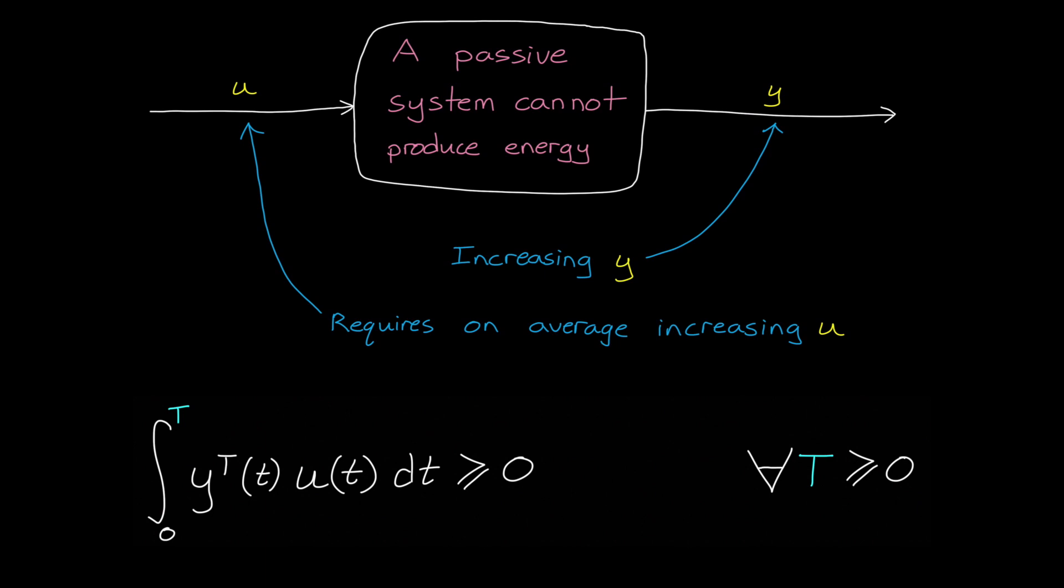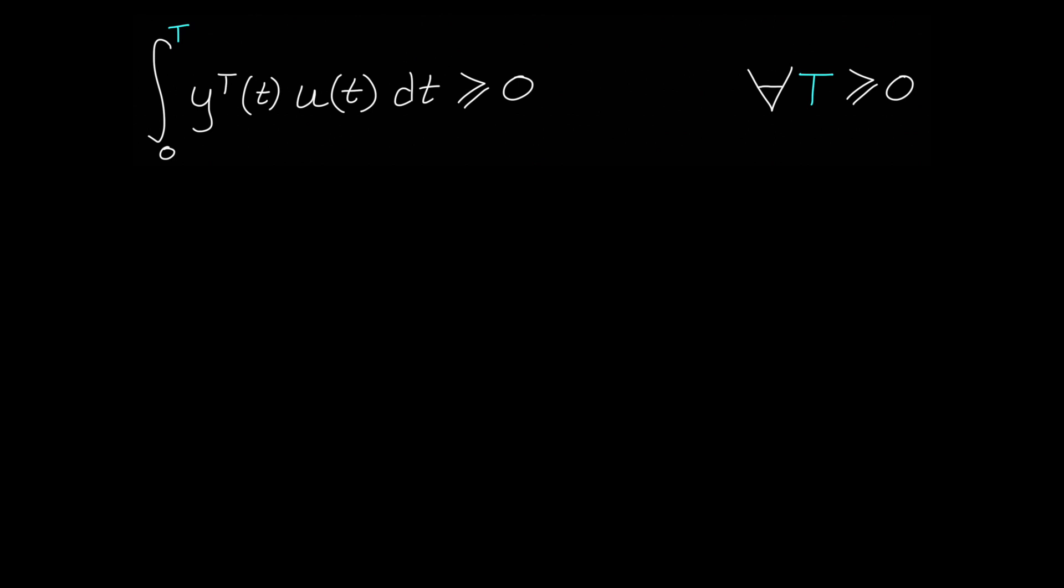Mathematically, this is represented by this inequality. This is saying that the inner product of the output and the input must be greater than zero for all time given zero initial condition. Basically, if you multiply the output and the input together, the sum should always be positive, given all input-output trajectories. If so, then the system is passive. And this kind of seems like a strange constraint to place on a system, but it turns out that there is some physical reasoning behind it.